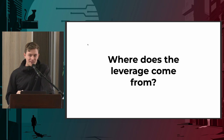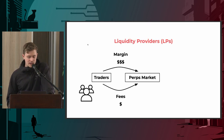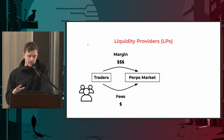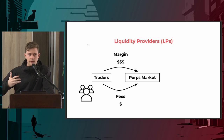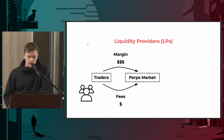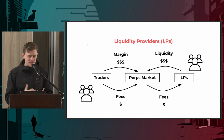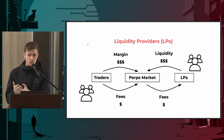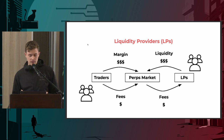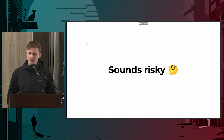Where does leverage come from? There's a second actor in the system called liquidity providers. Liquidity is just a fancy term for money - if you've got excess money, you take it to the market and loan it. Traders borrow that money and pay fees. Those fees go to the market and get paid to the liquidity providers. So if you've got excess money lying around, you can actually become a liquidity provider and make money from it. Traders don't always make the right calls though - what happens in the worst case?